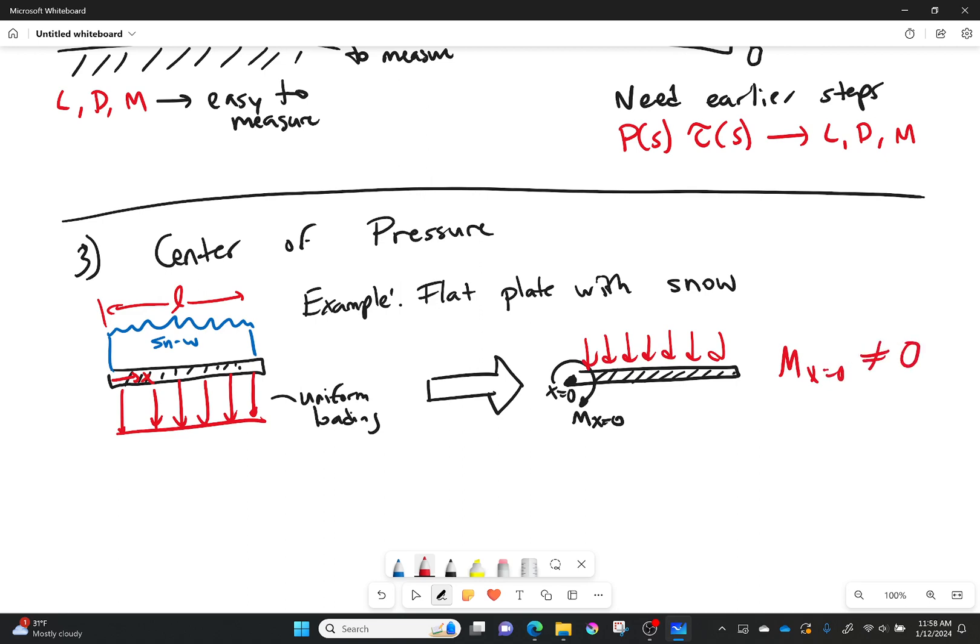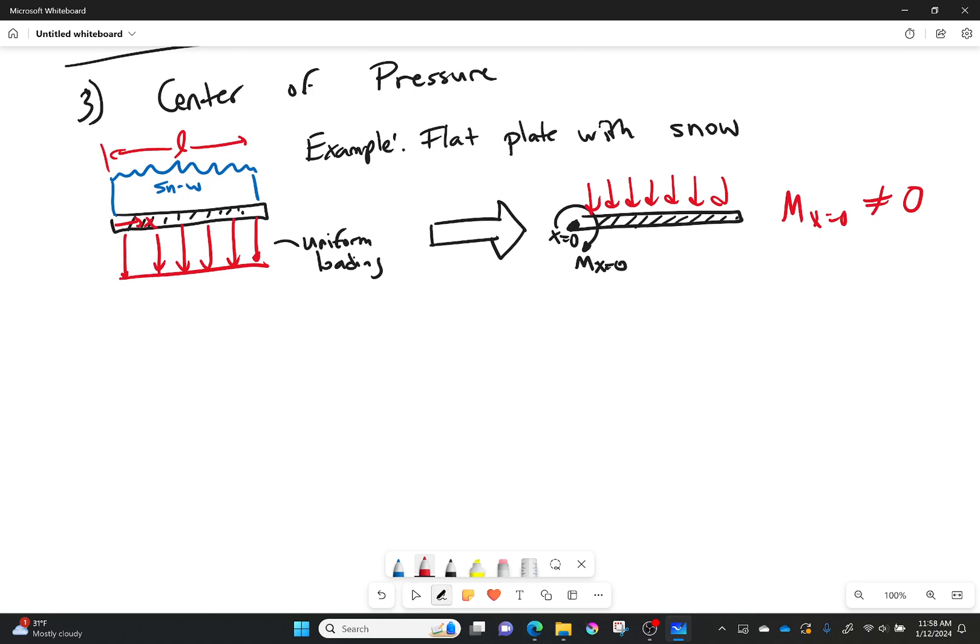However, I didn't have to choose that point. I could have chosen anywhere else I wanted to. So in the second case what I'm going to do is I'm going to choose to take the moment around the center. This will be the moment at x equals L over 2. So I still have all those forces coming down, but now there's an equal amount of forces on both sides. So my moment at x equals L over 2 is equal to 0.